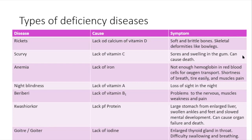Kwashiorkor, like scurvy, can cause organ failure and lead to death. Next we have goitre. Goitre is caused by a lack of iodine. We mentioned that iodine is very important for the production of the hormone thyroxine. Symptoms include an enlarged thyroid gland in the throat and difficulty swallowing and breathing. When the thyroid gland in the throat is enlarged and swollen, it can press upon the tubes needed for swallowing and breathing, so persons usually have difficulty with both.